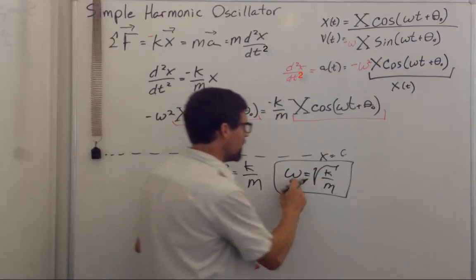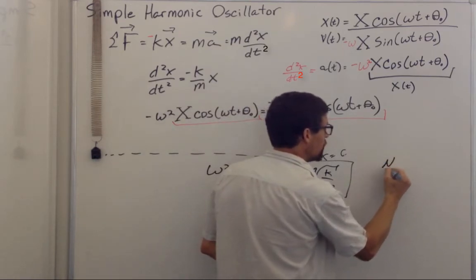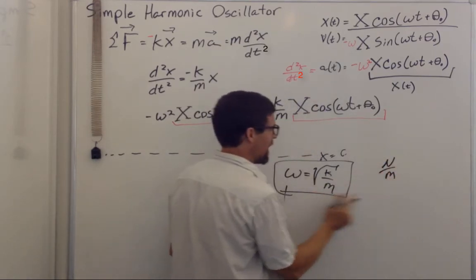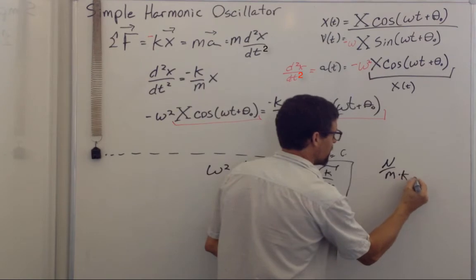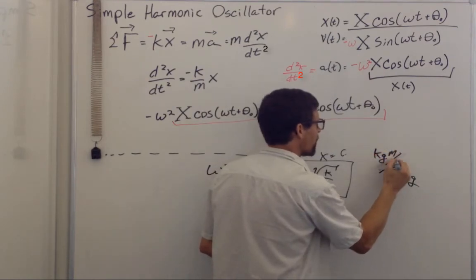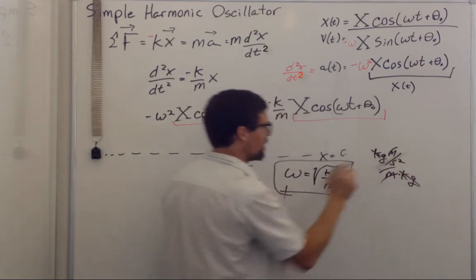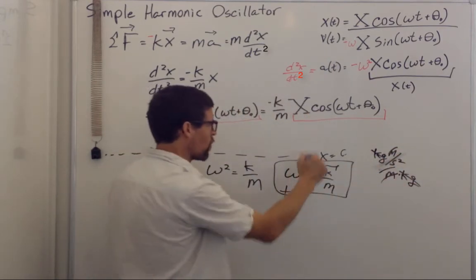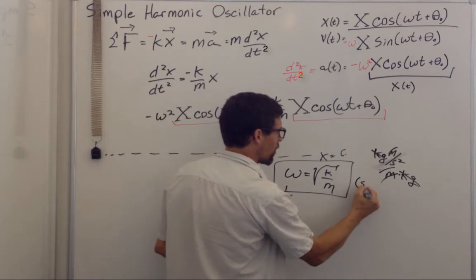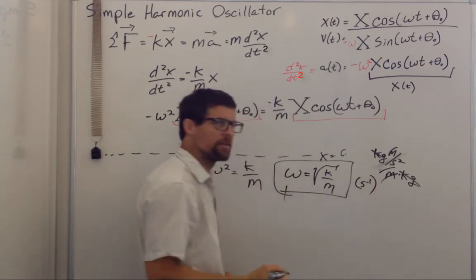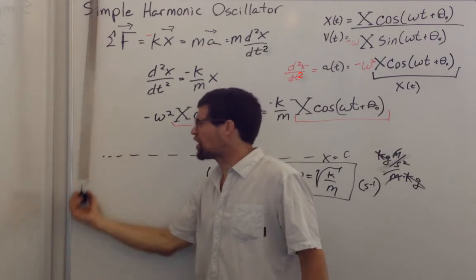Let's check units. In this case, k equals newtons per meter and m is a kilogram. A newton is a kilogram meter per second squared. So the meters and the kilograms cancel. Per second squared, square root, yes, per second. I like the units.